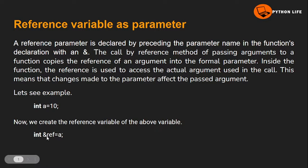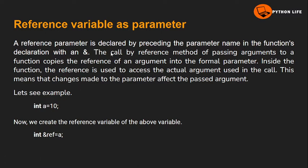We will show the reference variable. The reference variable has a data type and ampersand: reference variable is equal to variable. For example, int a is the data type, ampersand reference variable is equal to a. We will make a function and do the declaration using the reference variable. Now let's show the example.